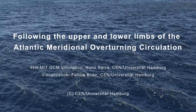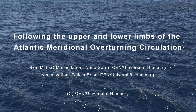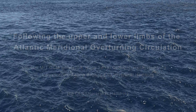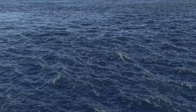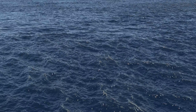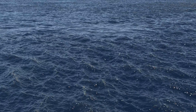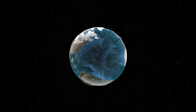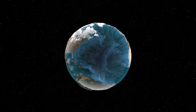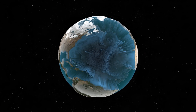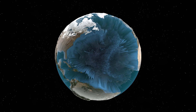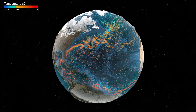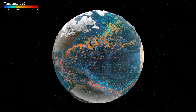Due to large incoming solar radiation in tropical regions, the upper layers of the Atlantic Ocean gain heat at low latitudes. Ocean currents are set in motion to redistribute this heat to higher latitudes, warming up the atmosphere along their path and contributing to mild weather conditions over Europe. This corresponds to the upper limb of the Atlantic Meridional Overturning Circulation, AMOC for short.